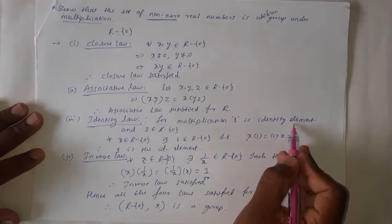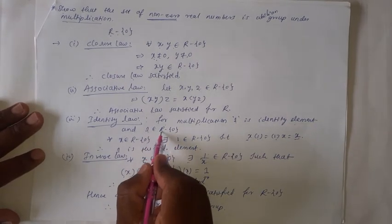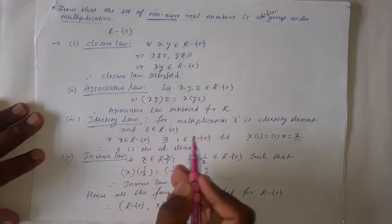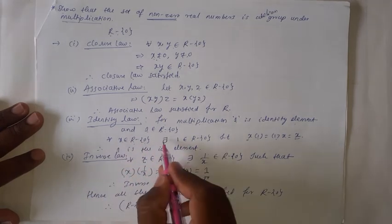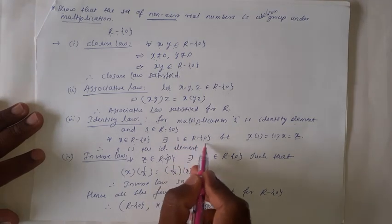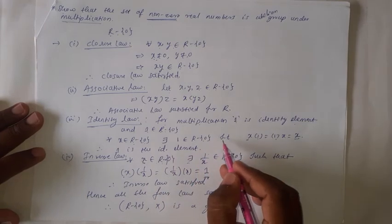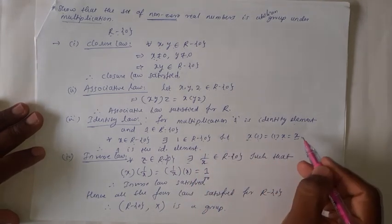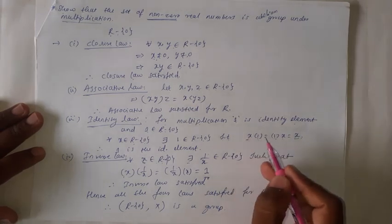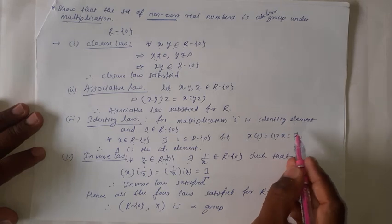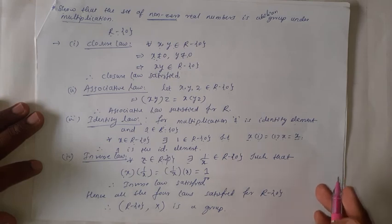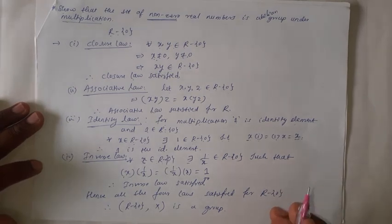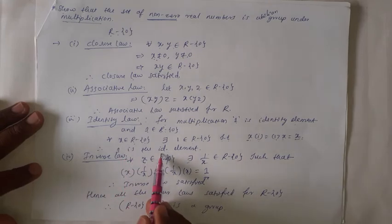For the Identity law under multiplication: 1 is the identity element, and 1 belongs to R\{0}. For all x belonging to R\{0}, there exists 1 belonging to R\{0} such that x·1 = 1·x = x. Multiplying x by 1 or 1 by x gives the same number, so 1 acts as the identity element for R\{0} under multiplication. Therefore, 1 is the identity element.